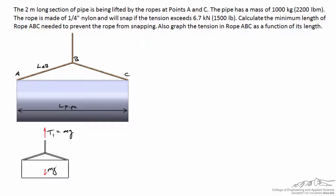Unfortunately, that doesn't answer our problem. We need to isolate rope ABC to find the tension in it. I propose we do this by looking at the knot at location B, where the two ropes are knotted together. A free body diagram of the knot itself is just a dot, and there are three forces acting on it: T1 acting upward, TAB acting diagonally to the lower left, and TBC acting to the lower right. Because the knot isn't accelerating, the sum of forces in both horizontal and vertical directions must equal zero.